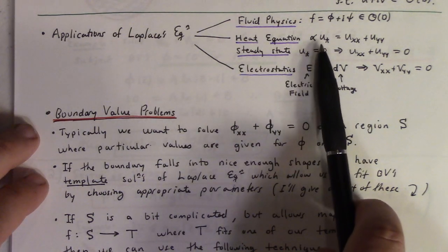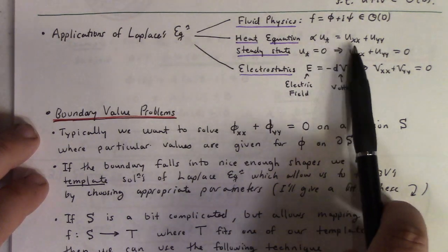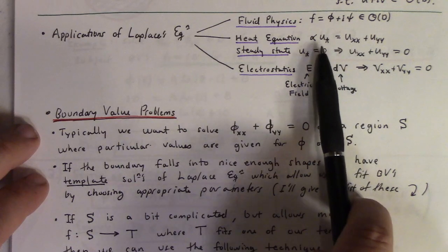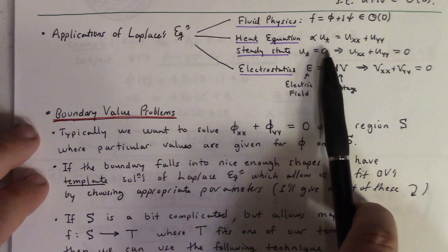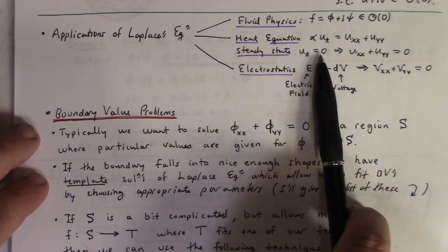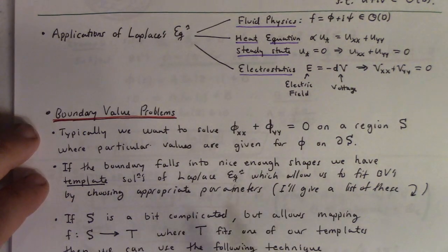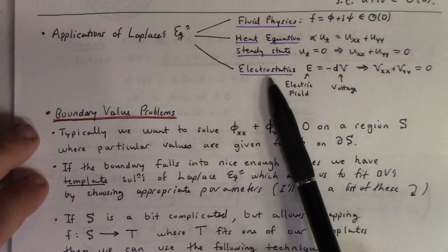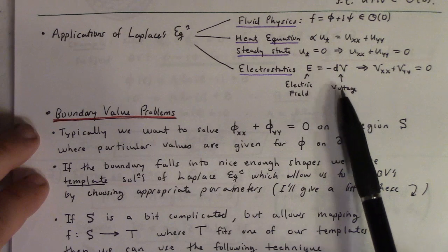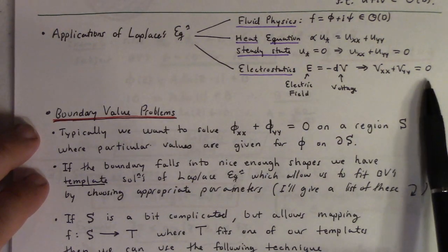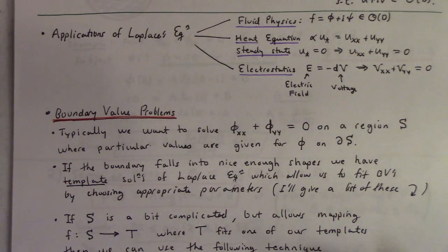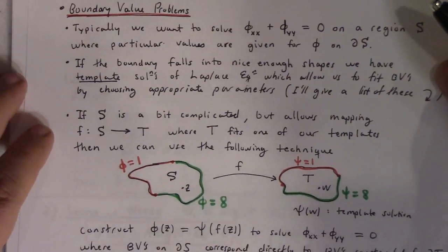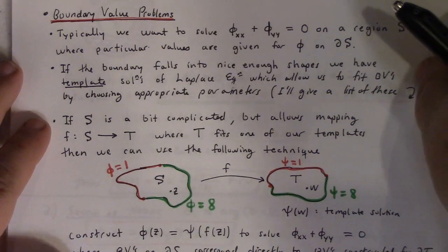The second application is the heat equation. The heat equation states that the time derivative is proportional to u_xx plus u_yy — this is how temperature is distributed in a two-dimensional region. If we look at steady-state solutions where u_t equals zero, we're back to Laplace's equation. So solving Laplace's equation is finding a steady-state temperature distribution. Third is the electrostatics problem: the electric field equals minus the differential of the voltage function, meaning the voltage function is harmonic. Laplace's equation is one of the most famous and important problems in mathematical physics.